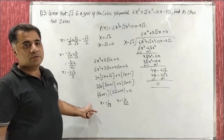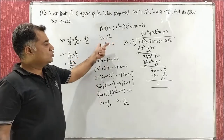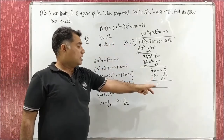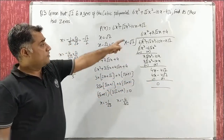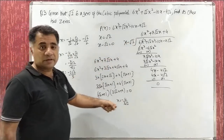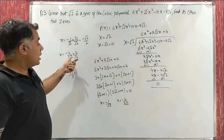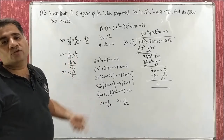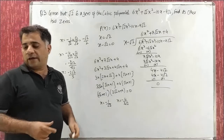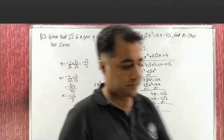I hope you understood. It all started with x = √2. Then we formed the factor. Then we used long division method. Remainder came to 0. Then we did middle term split on q(x), which gave us the zeros. Finally, we rationalized to remove radicals, giving two values of x.